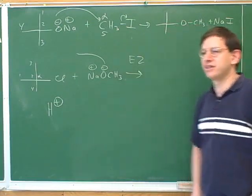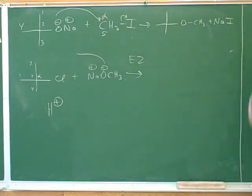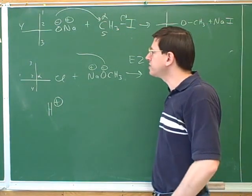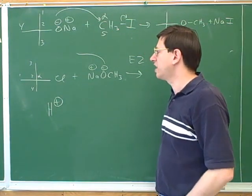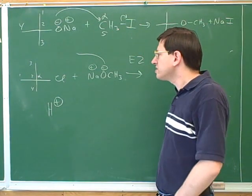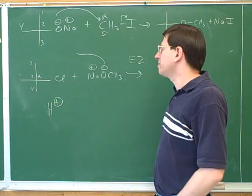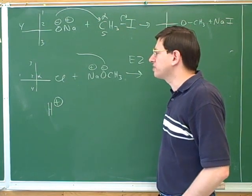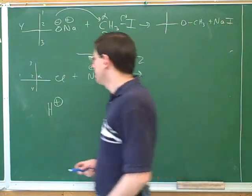We said this was going to act like a base. What do bases do? Bases are going to lose electrons, and you're going to gain a proton. Let's focus on that gaining the proton idea. Where is it going to take the proton from? It turns out that in an elimination reaction, we take the proton from the beta carbon.